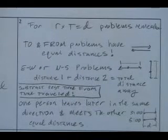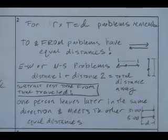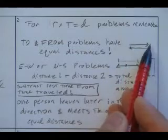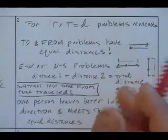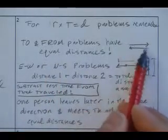For rate times distance equals distance. These rate-time-distance problems. Here's the little tips if you want to write these down. When you have to-and-from problems, someone goes up a hill and comes back down, or goes to Sacramento and comes back. Your equation's probably going to come from the fact that there are equal distances. The distance there is the same as the distance back.